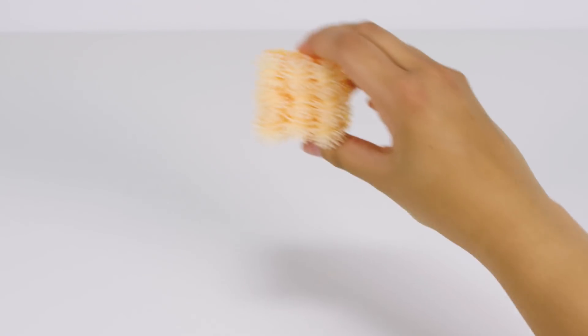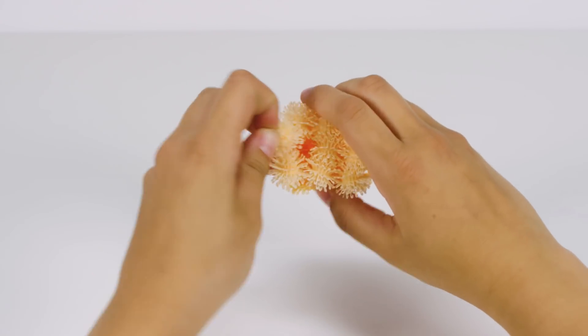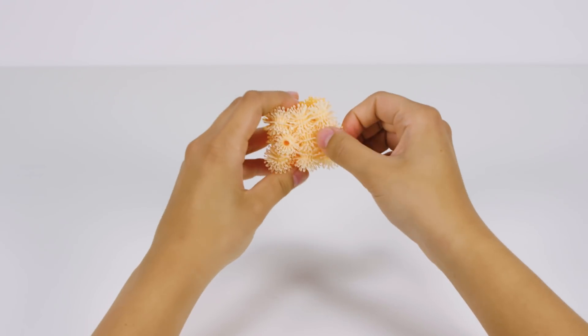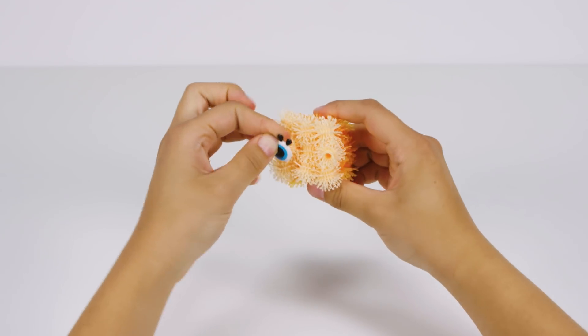In the middle row, make sure the holes of the far left and right Bunchums are facing you. Insert the eye accessories.